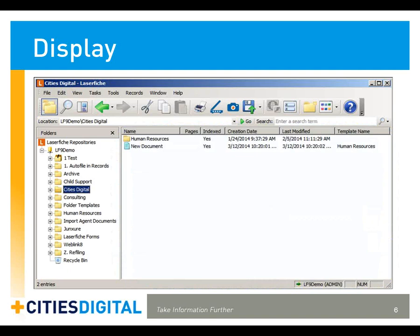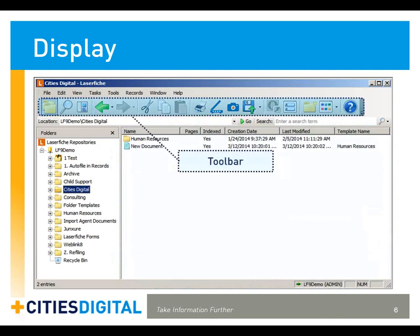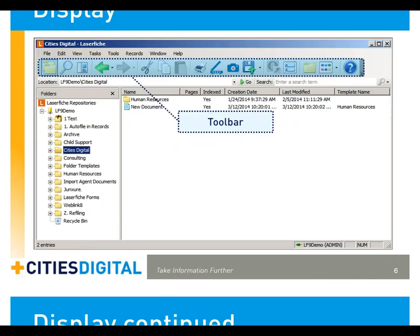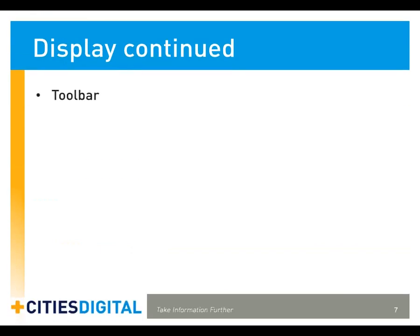At the top of the display window is the Toolbar, a collection of many commonly used functions in Laserfiche. Starting at the left-hand side, you'll see three buttons that toggle panes in the display window. From left to right, they are the folder pane, search pane, and preview pane buttons.